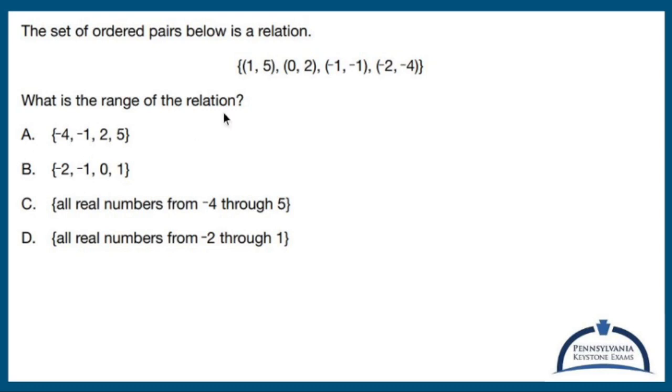The range is the y values. Domain is the x, range is the y. So 5, 2, -1, -4. It looks like they want me to put it in order, so putting it in order from least to greatest.